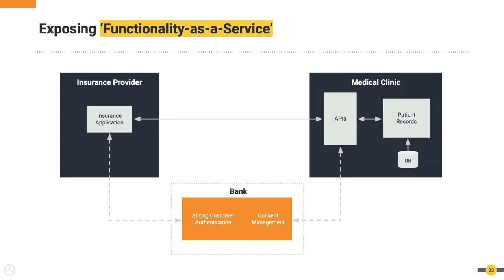Let's take an example: a bank has strong customer authentication and consent management capabilities in its identity and access management platform. There is a medical clinic — a customer gets treatment there. The medical clinic has a medical information system with patient records, treatments, and associated charges. The customer wants their insurance provider to pay for this treatment. This is a classic case where the medical clinic has data that can be shared with the insurance provider through APIs — but obviously it can't do that without the patient's consent. This is especially important in the post-GDPR world, where similar regimes are coming globally, such as LGPD in Brazil.